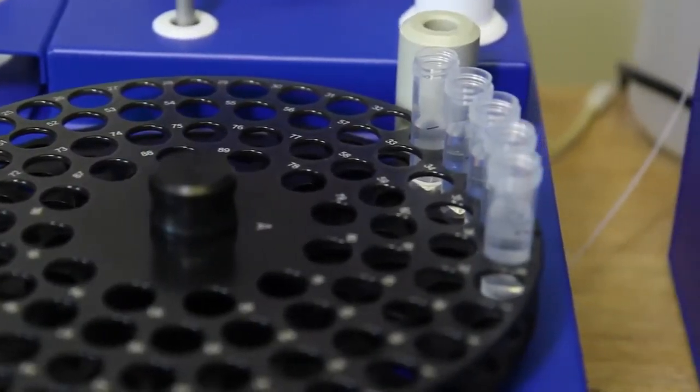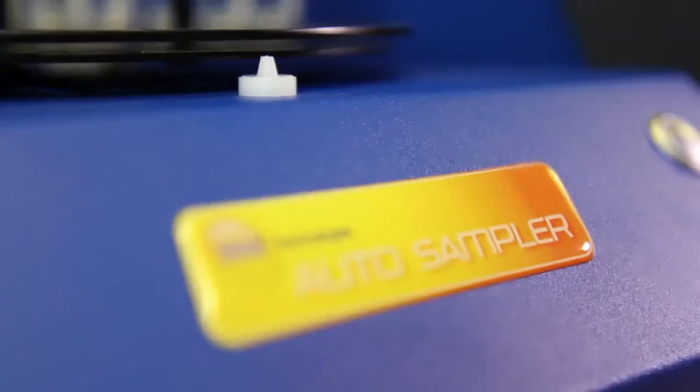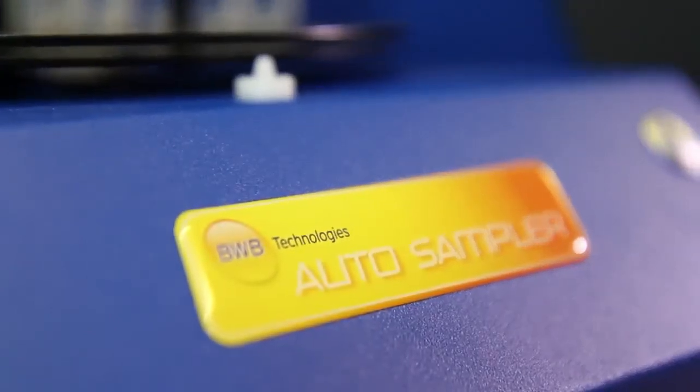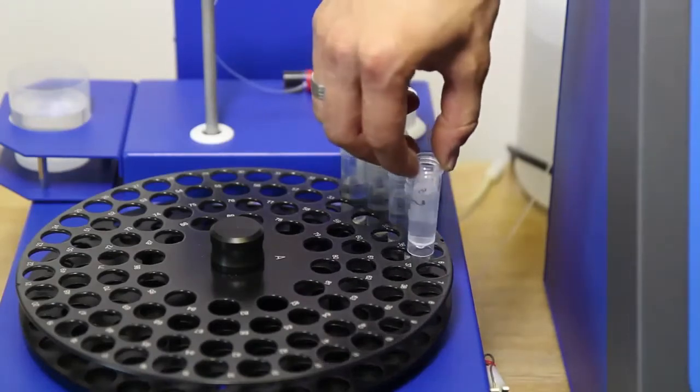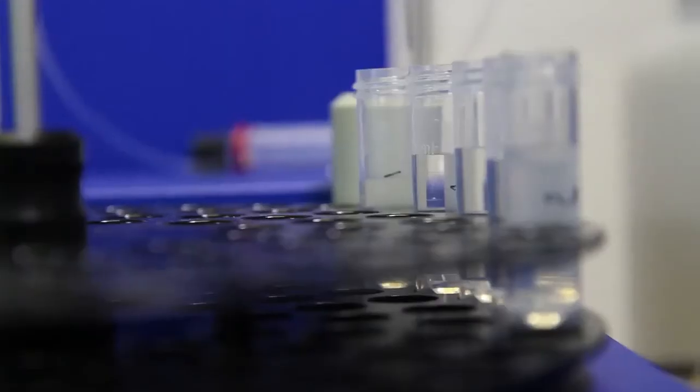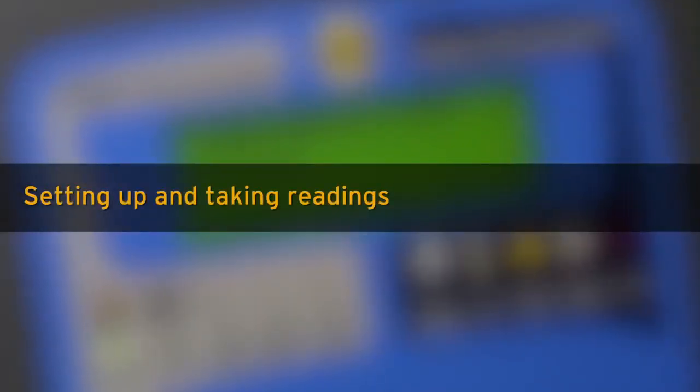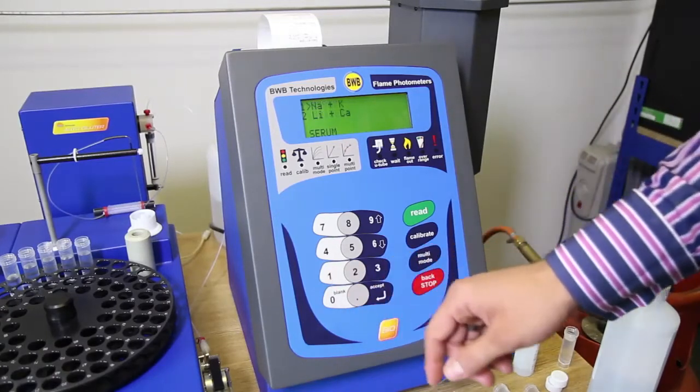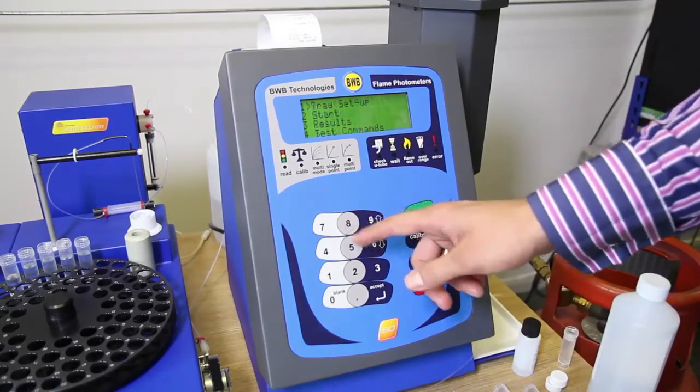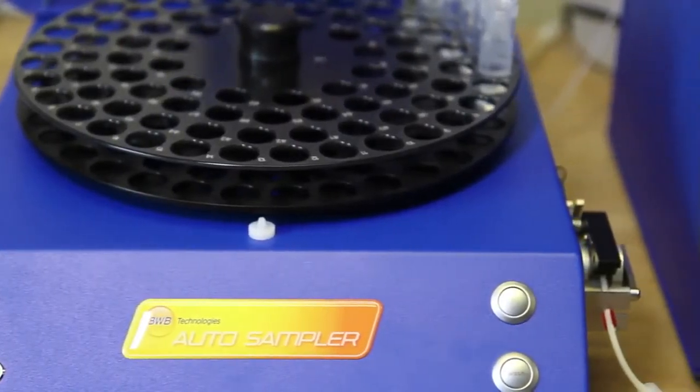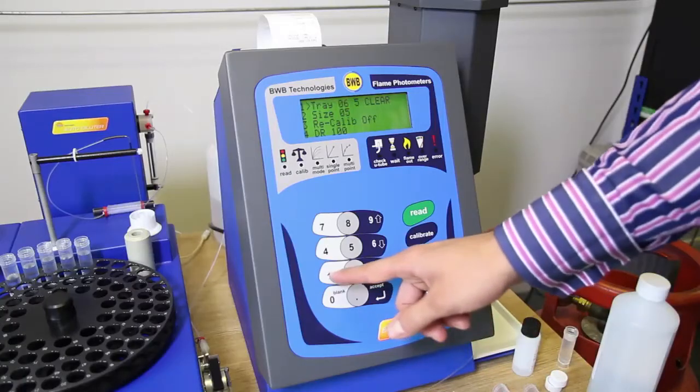Welcome to the BWB training series. Today we will be looking at how to set up a tray using the BWB Auto Fluid Handling System and the BWB Bio Flame Photometer. The AFHS has been designed to automate the calibration and sampling workflow. Your AFHS can accommodate up to 89 samples. From the main menu, select serum or urine and your ions of interest. Select number 8, AFHS. Now choose tray setup.